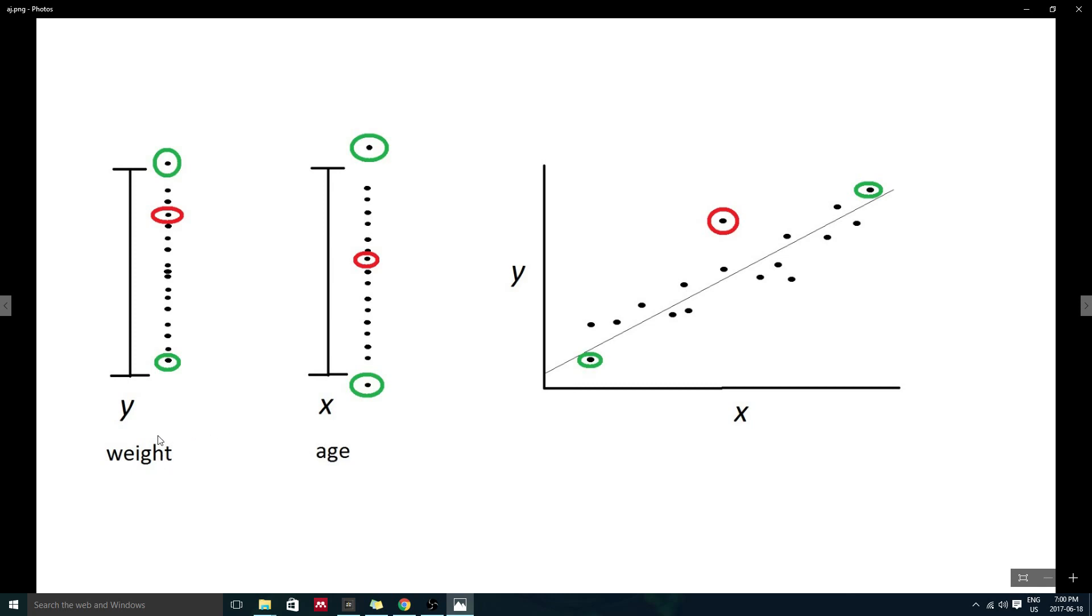While the weights on the extreme ends of our distribution look very large, they actually seem reasonable once we consider the person's age. Just as an example, let's pretend we are examining weight in people aged 10 to 20 years old. We actually would expect somebody who's 20 years old to weigh more than all these other people, and likewise, it's appropriate for the 10 and 11 year olds to weigh the least.